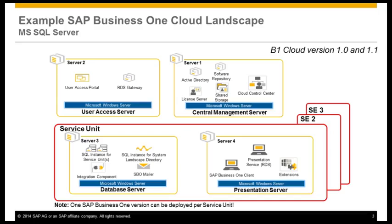The RDS gateway controls the load balancing of the user accesses and distributes them to the different presentation servers. The service unit includes the database server, respectively the database instances, and the presentation server. Only one SAP Business One version can be deployed per each service unit — this means per release and patch level. Multiple service units can be set up and administrated in the Cloud Control Center.